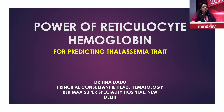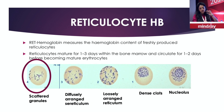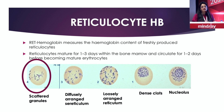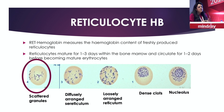I will be talking about the power of the reticulocyte hemoglobin for predicting thalassemia traits. Reticulocyte hemoglobin is basically the hemoglobin which is present in the reticulocytes.